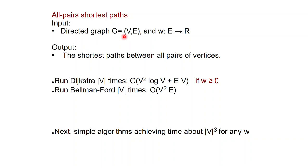There are some obvious approaches for solving this problem. We can of course run Dijkstra's algorithm V times. Remember that Dijkstra, given a source, computes the shortest paths to every other node in the graph, so if we run Dijkstra from every possible source we would solve this problem. This would have time V times the time for Dijkstra, which is order of V squared log V plus EV, and it would require that the weight function is positive.